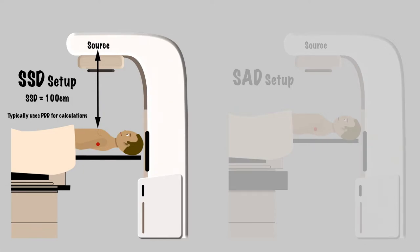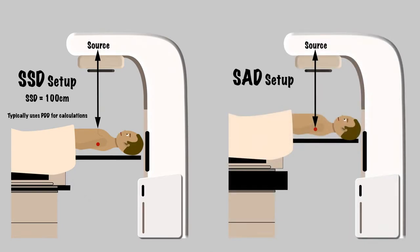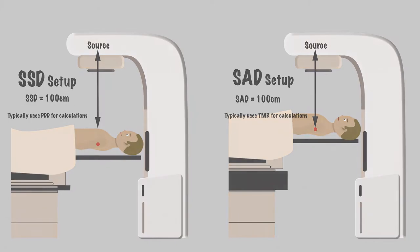For an SAD setup, inverse square is typically not needed since the calculation point often remains constant for this type of isocentric setup. Determining the monitor units required to deliver the prescribed dose generally only requires the use of the TMR. Tabulated TMR data is not dependent upon SSD.